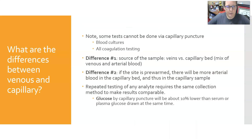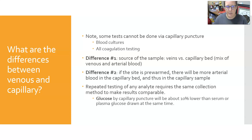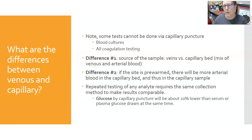What are the differences between venous and capillary blood? First, some tests cannot be done via capillary puncture — those are blood cultures and all coagulation testing. The first difference is the source of the sample: venous blood comes from the veins, while capillary blood comes from the capillary bed, which is a mix of venous and arterial blood.